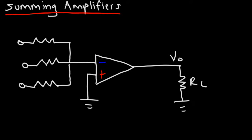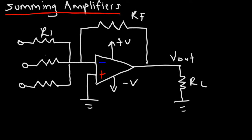This is going to be the output, and you could have a load resistor. So let's call this Vout. And of course, we need our feedback resistor, Rf. And then we need our supply voltages. So this is going to be R1, R2, and R3. And the voltages applied at these three different inputs will be called V1, V2, and V3.